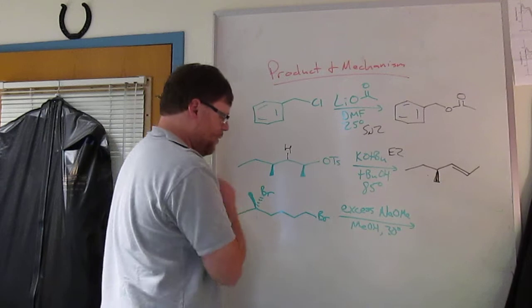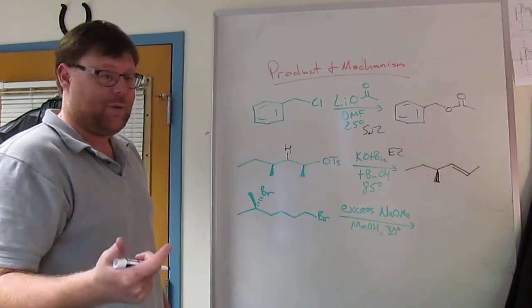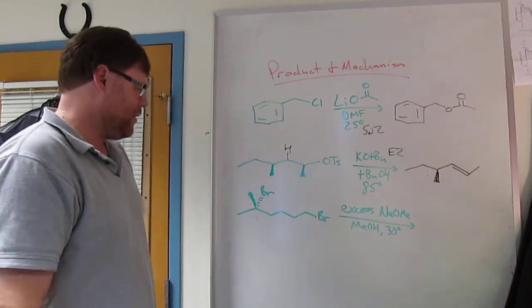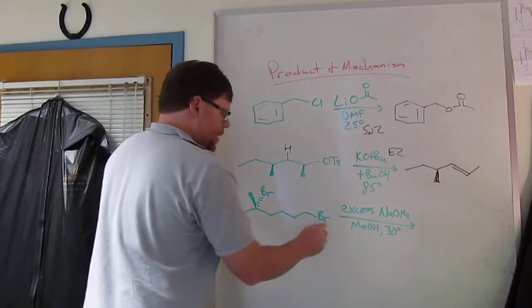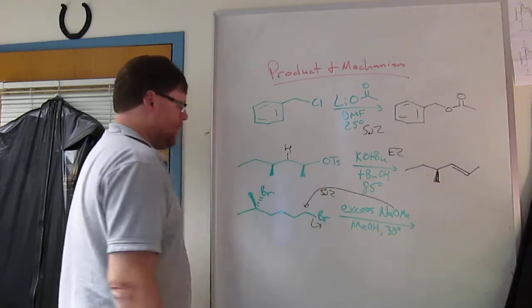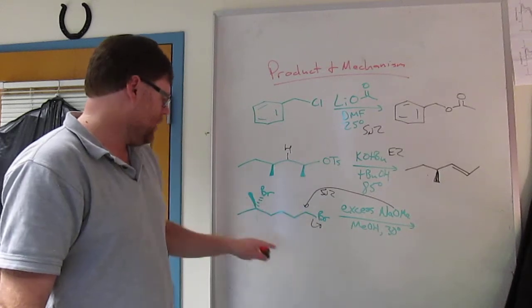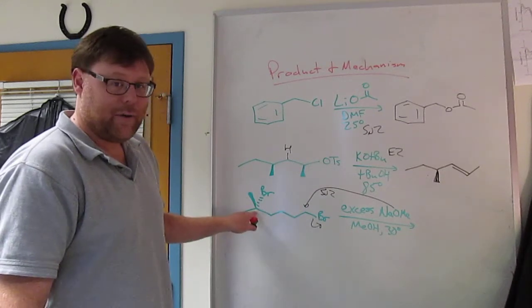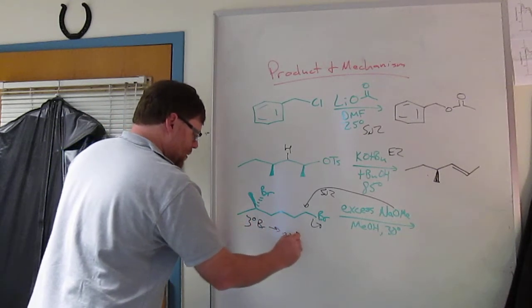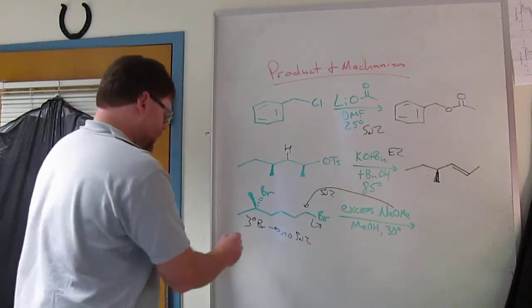And so what about that? We have two leaving groups. We have a strong base that's also a good nucleophile. So E2 or SN2. Lower temperature, so substitution is going to be favored over elimination. So on the primary leaving group, the methoxide can do an SN2 here. So we can use an SN2 reaction to kick out the bromide. That'll put a methoxide here. What about on the tertiary bromide? Tertiary bromide, you can't do SN2. So we can't do SN2. We have a strong base, so it will do E2.